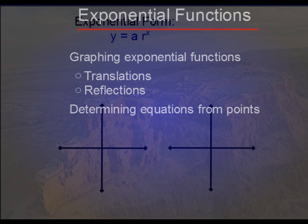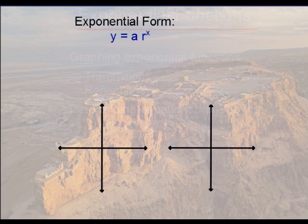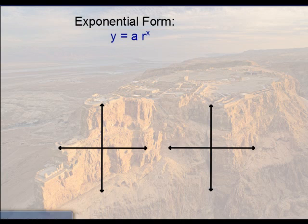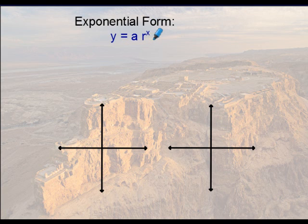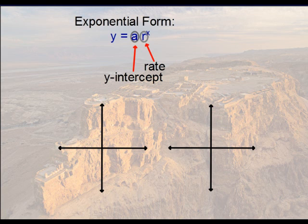Let's first look at what an exponential function should look like when we write the equation. This here is your form y equals a times r to the x. A represents your y-intercept. If you were to plug in zero for x, that would make r to the zero which is one and that would only leave you with a. R is the rate in which an exponential function is growing or decaying.